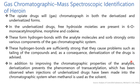First, gas chromatographic mass spectrometric identification of heroin. The opiate drugs will chromatograph in both the derivatized and underivatized forms. So first of all, what is the need to derivatize the given compound while analyzing by GC? Generally, in GC the sample to be analyzed should be volatile in nature, and whenever the sample is volatile we can have proper analysis with GC or GC-MS. But in the case of opiates we have to perform the analysis in both derivatized and underivatized form.